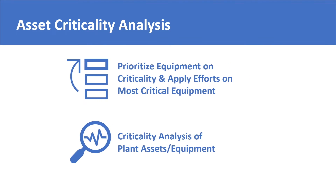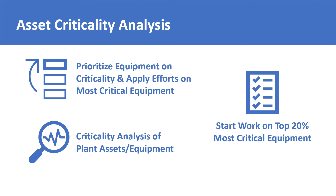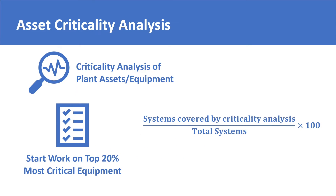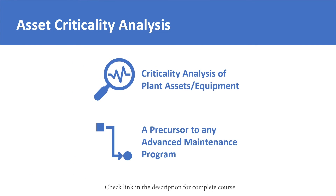A best practice is to apply an advanced maintenance program on the top 20% of your most critical assets or equipment. In fact, how many systems are covered by criticality analysis expressed as a percentage is a metric in itself. In this way, criticality analysis is a precondition and a precursor to application of a reliability program or any other advanced maintenance program.